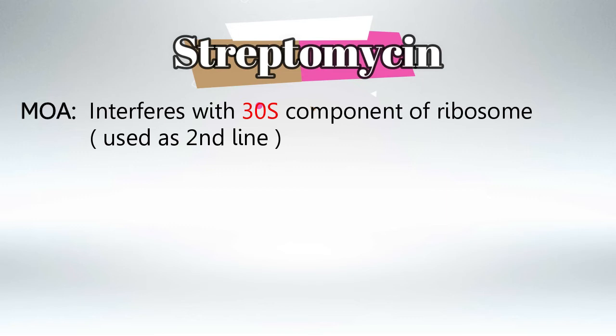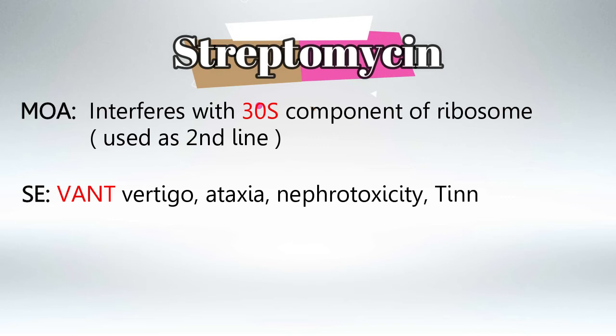To remember the side effects of streptomycin, just remember the word VANT: V for vertigo, A for ataxia, N for nephrotoxicity, and T for tinnitus.